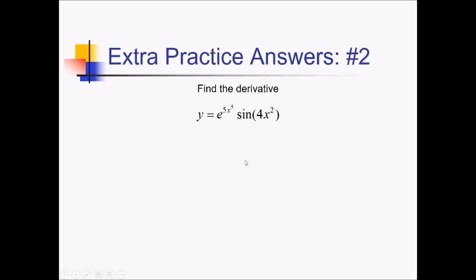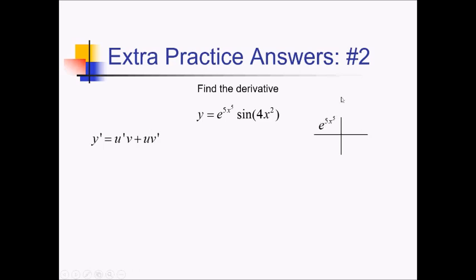On this problem, I'm trying to take the derivative of this product. So for that I'm going to have to use the product rule: u'v plus uv'. Let me use the box and ribbon for that. So I've got my two factors. The first is e to the 5x to the 5th, and then I have sine of 4x squared.